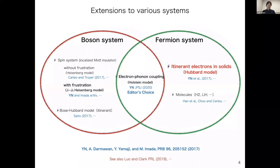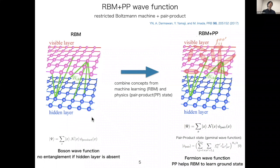Before explaining the application to frustrated spin systems, we start from the application to the Hubbard model, because we use a similar wave function. The RBM is basically a bosonic wave function, so to apply it to fermion systems, we need to prepare a fermion wave function. The simplest solution is to combine the bosonic RBM with a fermion wave function.